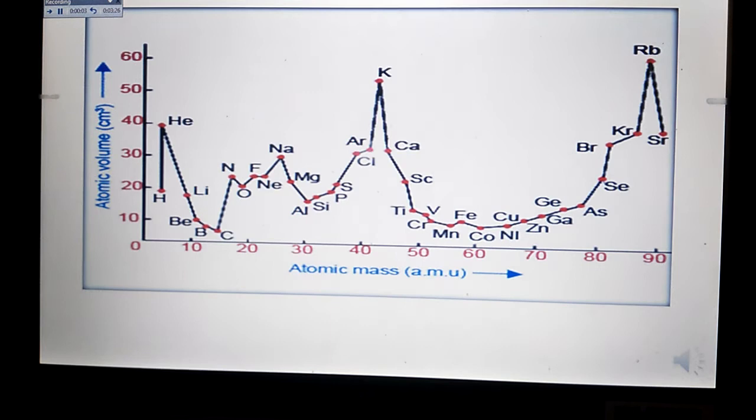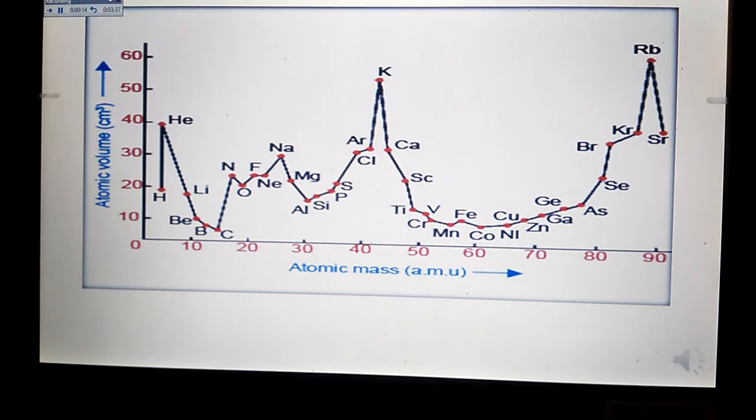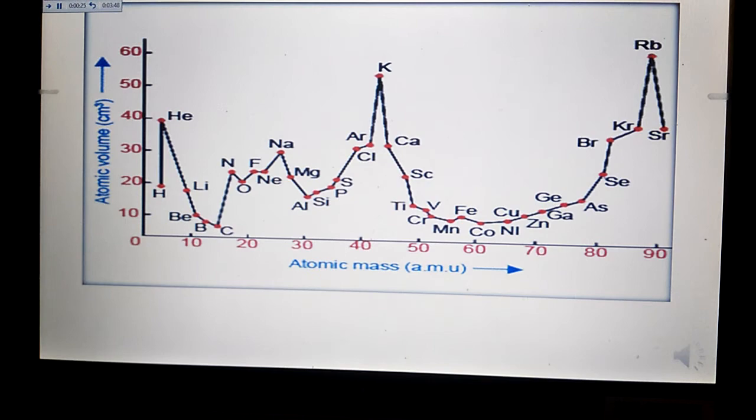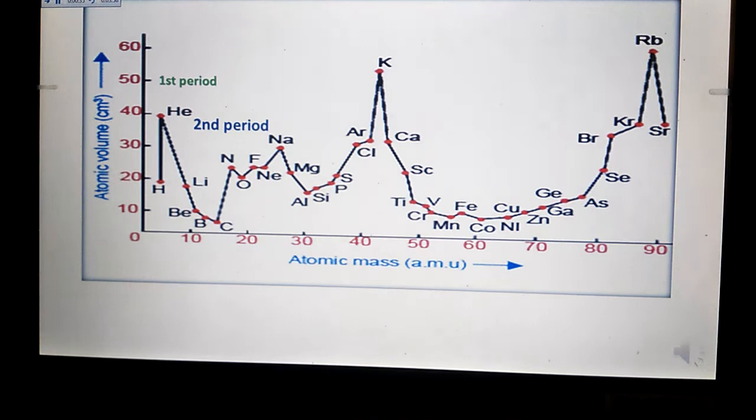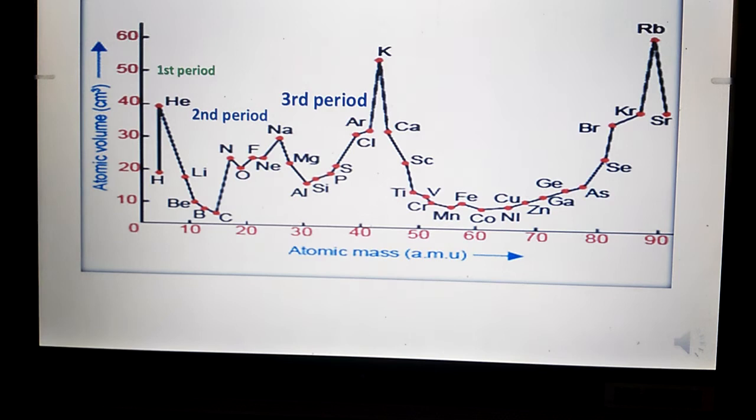Now he plotted the graph between atomic volume and atomic mass. Atomic volume is on the y-axis and atomic mass is on the x-axis. The second period contains lithium, beryllium, boron, carbon, nitrogen, oxygen, fluorine, and neon.